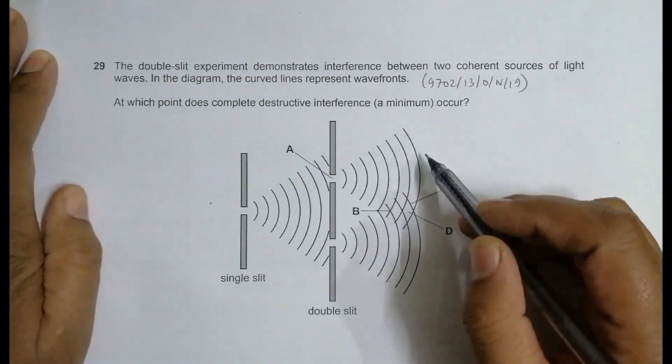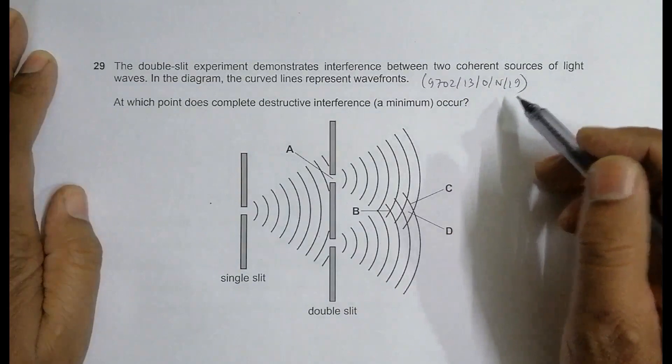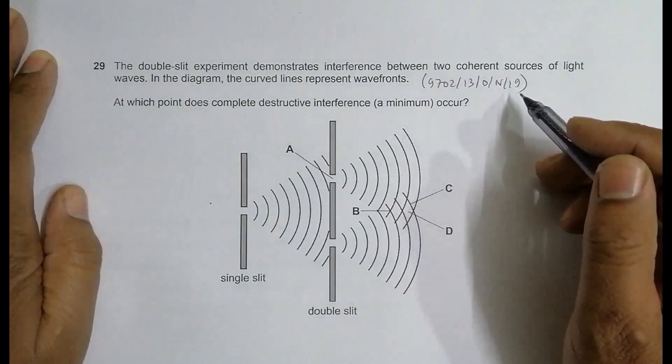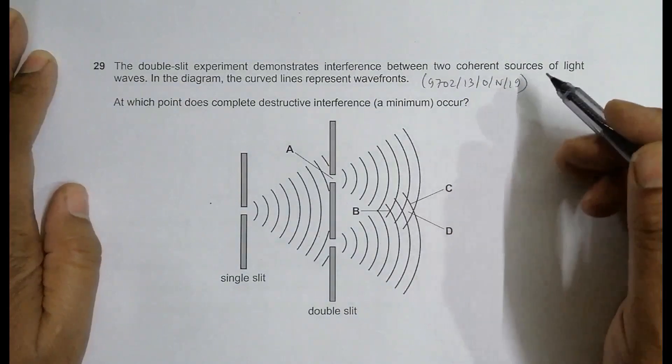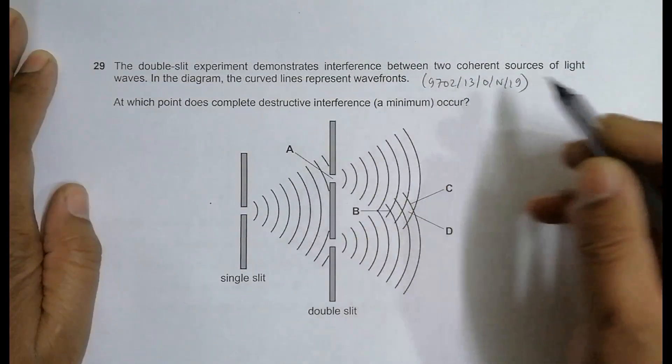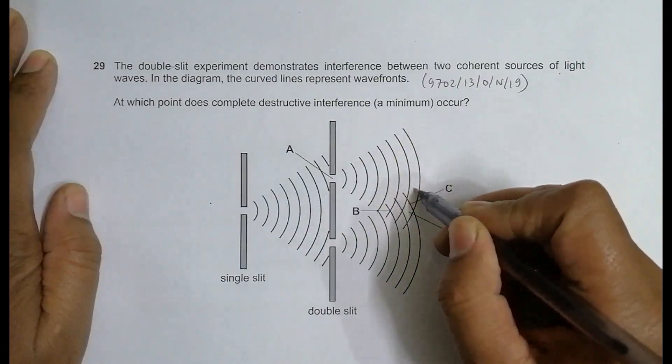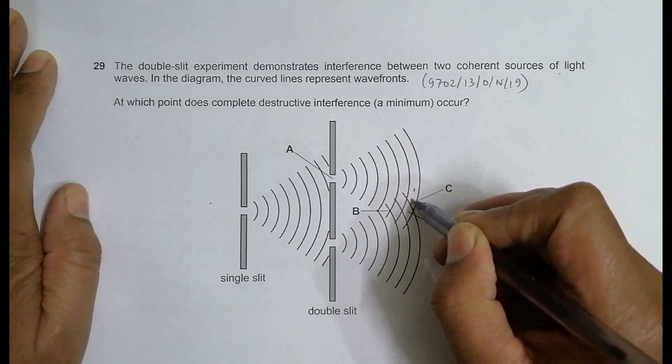As seen in the diagram, these lines represent the wavefronts. The wavefronts actually represent the shape formed by the crests or troughs. If I consider these as crests, we will have a trough in the middle here.